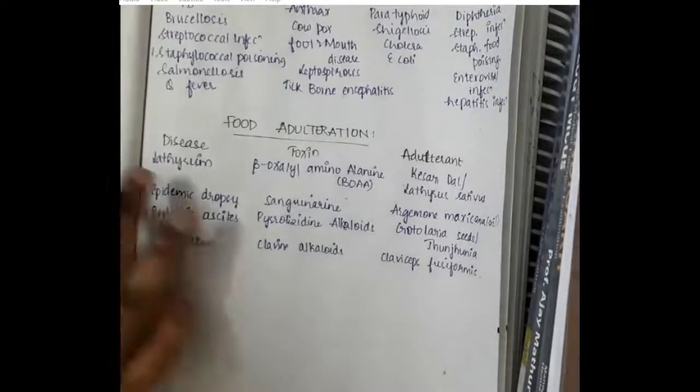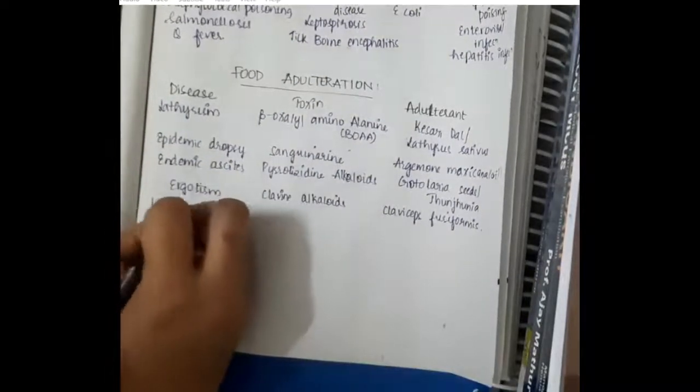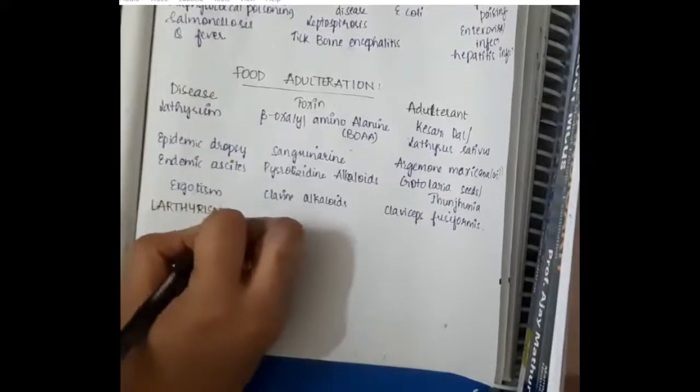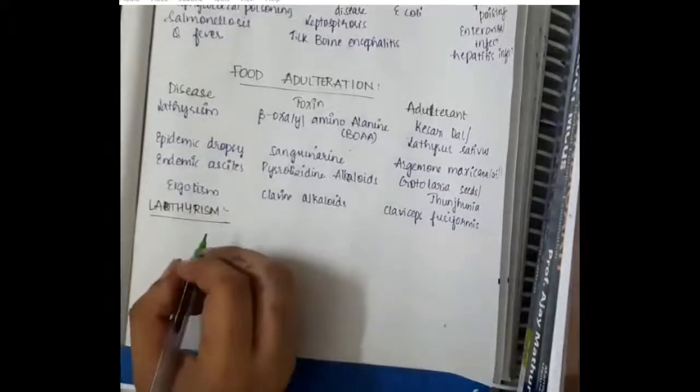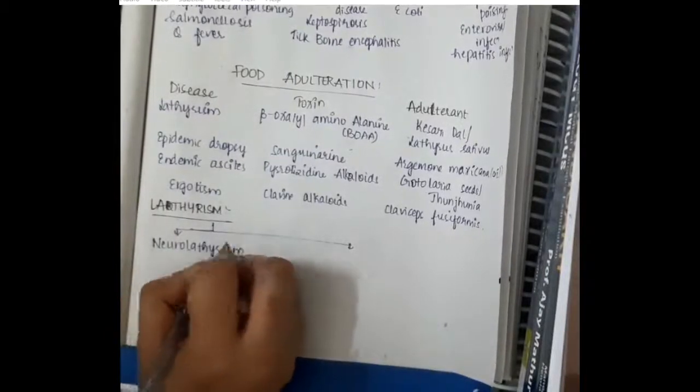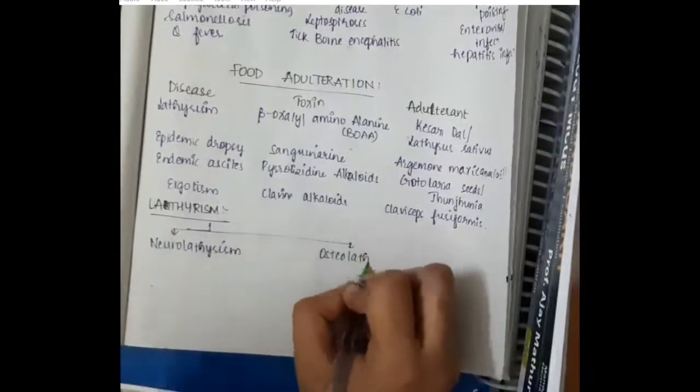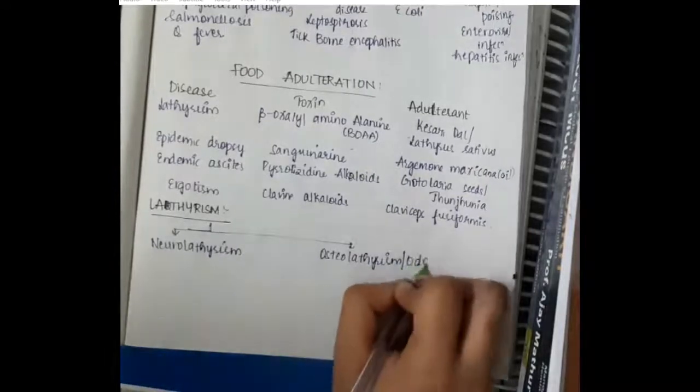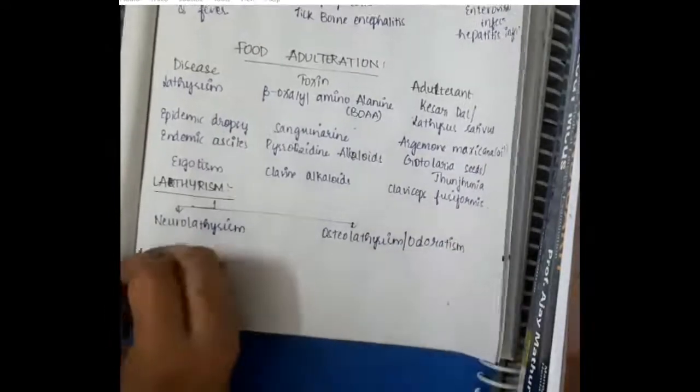Among all these, the one important thing which we have to learn is about latirism. Latirism occurs due to the toxin beta-oxalyl-amino-alanine and this is of two types: one, we have neurolatirism; second, we have osteolatirism or odoratism.